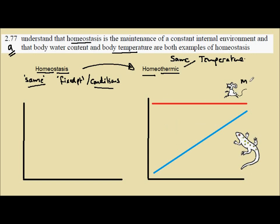You'll be aware that there are some organisms, mammals as an example, in which when the environmental temperature either increases or decreases, then their body temperature remains constant.